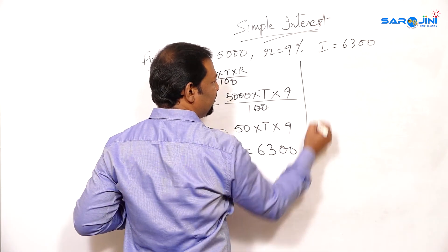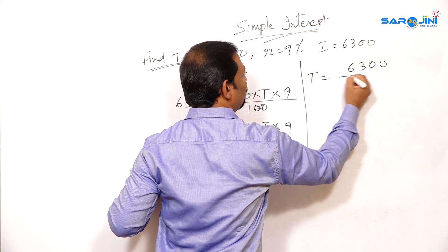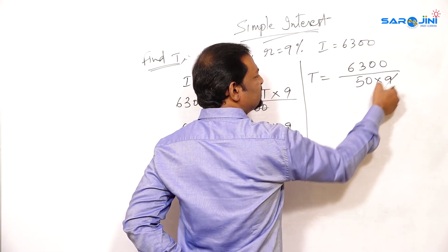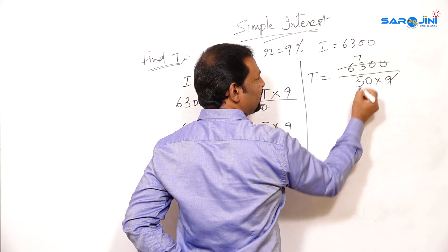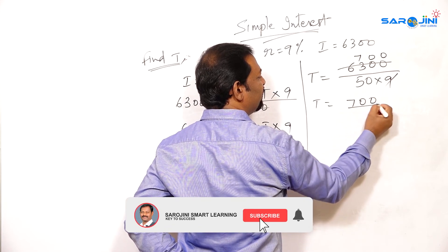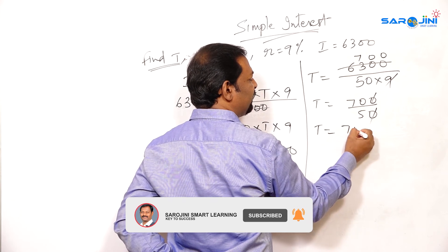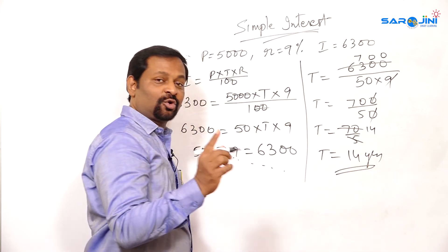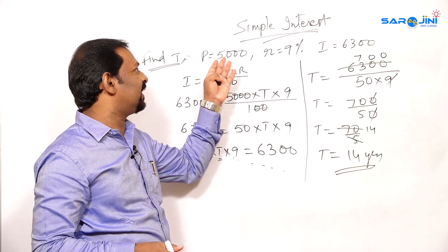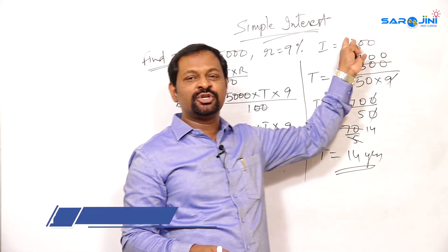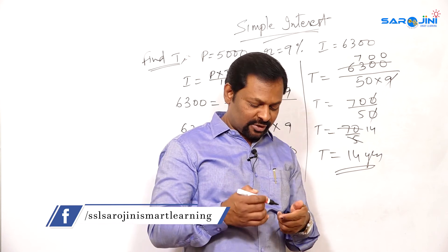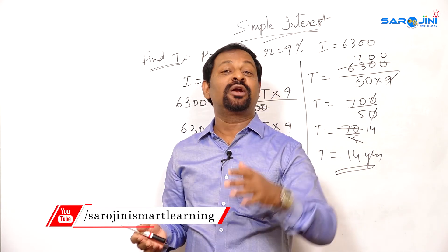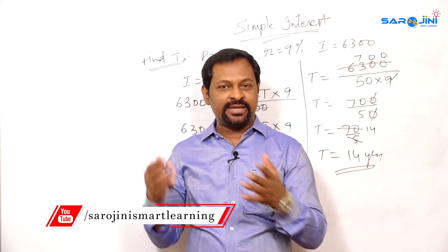So if you interchange: 50 into T into 9 is equal to 6300. Now find T. T is equal to 6300 divided by 50 into 9. So 9 sevens are 63 — T is equal to 700 divided by 50, which gets cancelled to 70 by 5. So T is equal to 14 years. The time is always calculated in years. So if you borrow 5000 rupees at the rate of 9%, after 14 years you have to pay 6300 as interest. In this way we calculate simple interest in different types — finding principal, time, and rate.